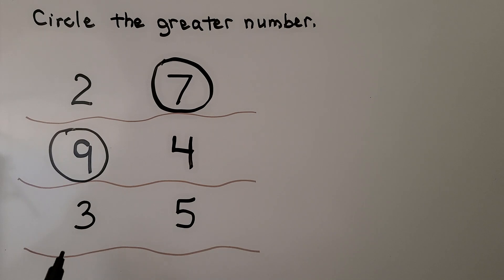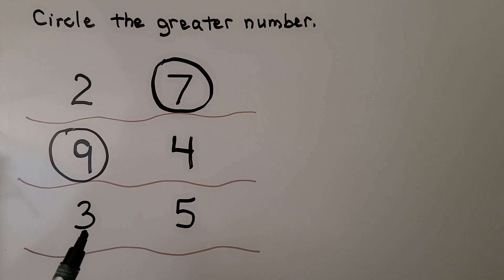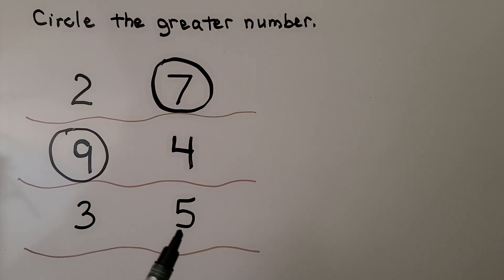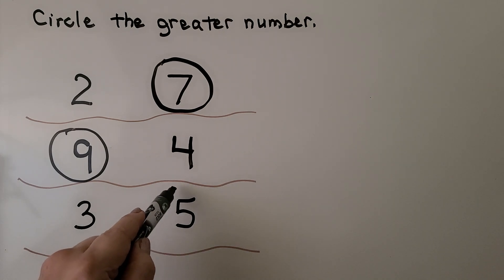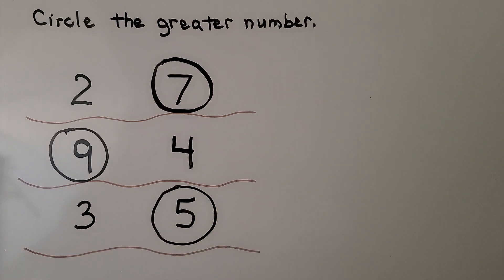Do you think three or five is the greater number? We can use counting order. Let's count: one, two, three, four, five. Five came after. If you said five is the greater number, you're right. Greater means more.